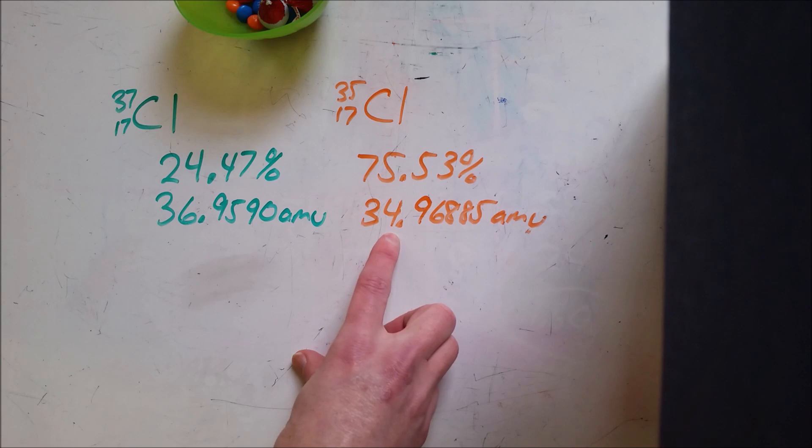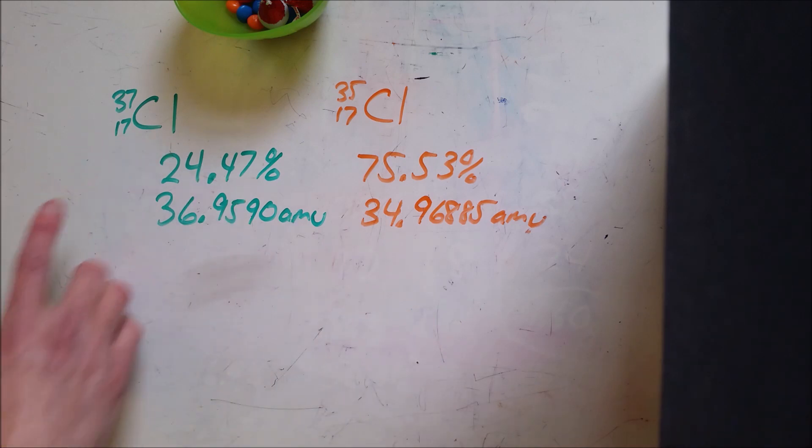Over here we have 75.53% of the time we get Chlorine-35 isotopes, and those have a mass very close to 35, 34.96885. So if I want to know what the average mass of a chlorine atom is—so all the chlorine that exists in the universe, what's the average of them—I know it's going to be somewhere between these two numbers.